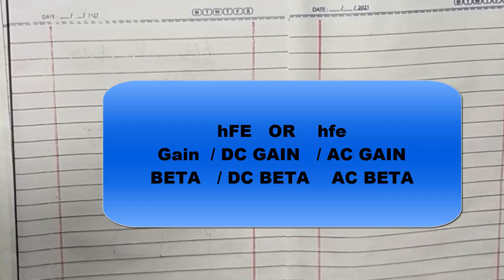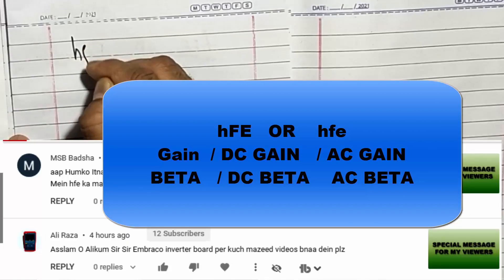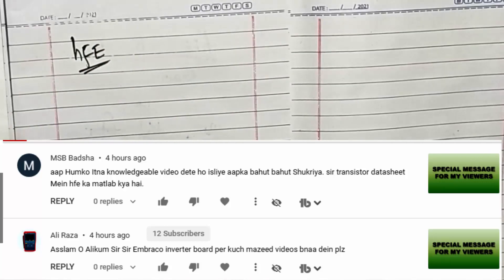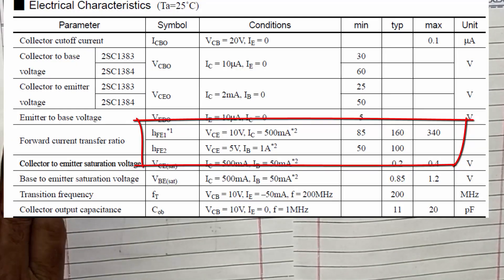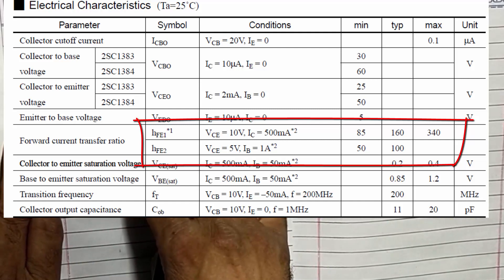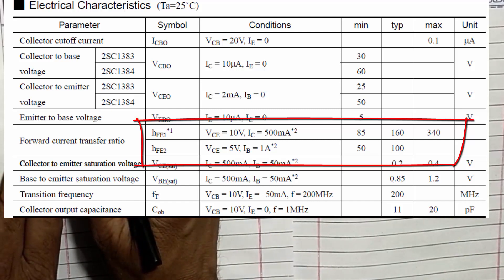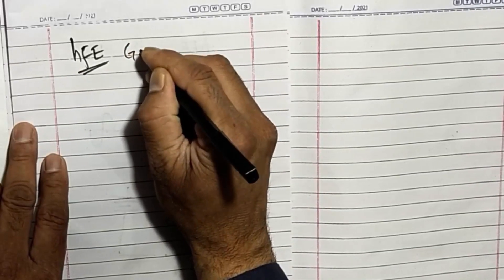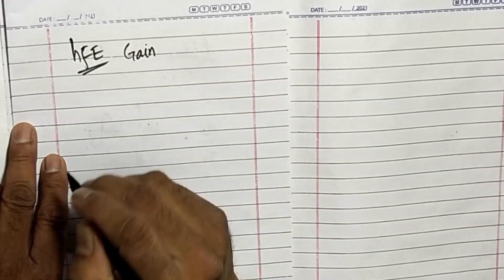Assalamu alaikum friends, welcome to my channel. When we check a datasheet of any BJT transistor, we see hFE. It is a factor also known as transistor gain.